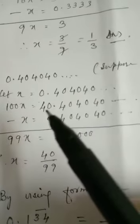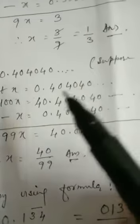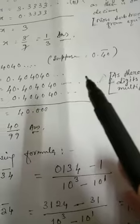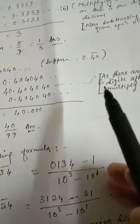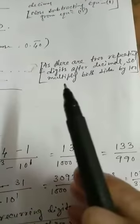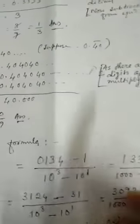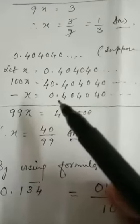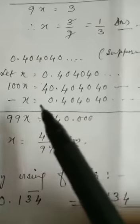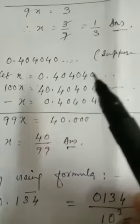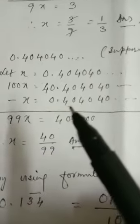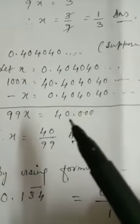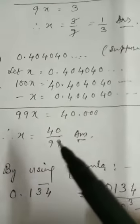That means you have to write 40.404040, and to write this way you have to multiply both sides by 100. So this is your first equation and this is your second equation. As there are two repeating digits after decimal, multiply both sides by 100. Now subtract the first equation from the second equation. So write x is equal to 0.404040 and subtract. You get 99x is equal to 40, therefore x is equal to 40 by 99.